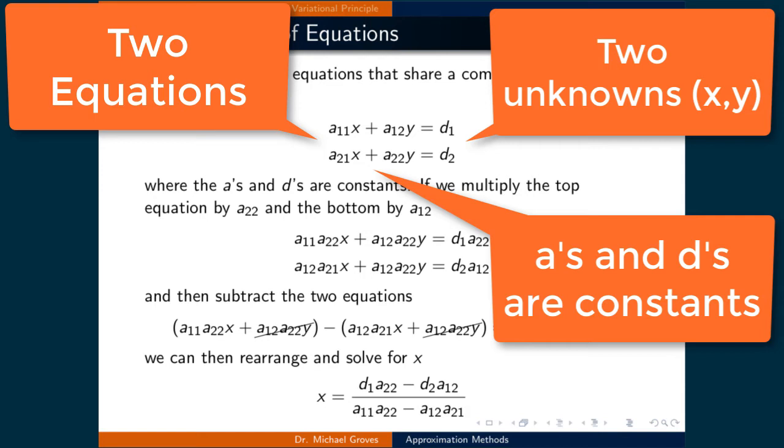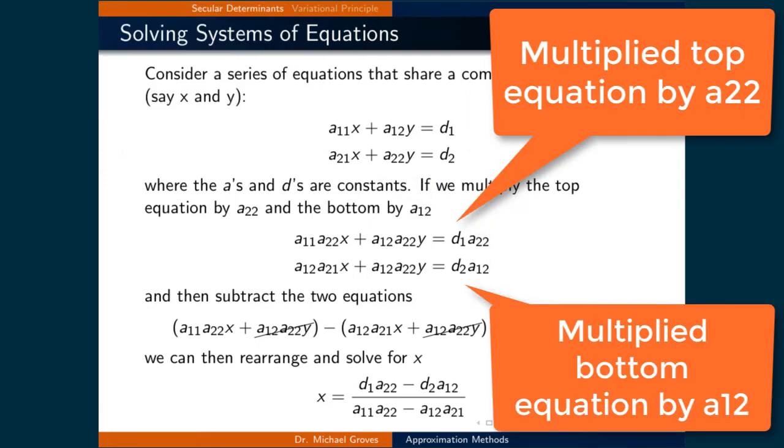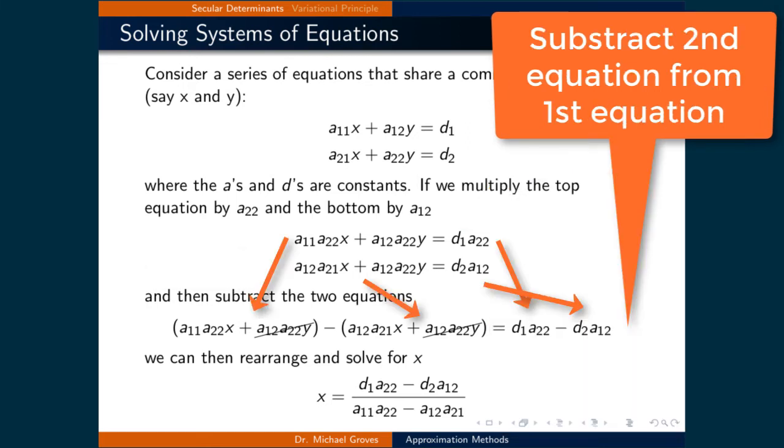One way to solve for x involves multiplying the top equation by a22 and the bottom by a12. This gives a11a22x plus a12a22y equals d1a22, and a12a21x plus a12a22y equals d2a12. The next step is to subtract the bottom equation from the top.